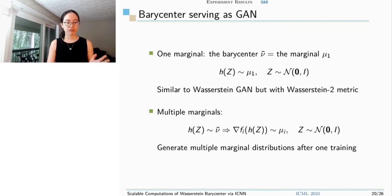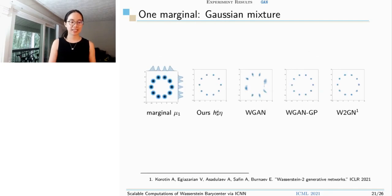That's because gradient of f_i is the map from barycenter to the i-th marginal. So we could input the samples z from standard Gaussian into h to get the barycenter samples, then input into gradient of f to get samples from marginal distributions. Let's look at some examples. We compare with Wasserstein GAN, Wasserstein GAN with gradient penalty, and the recent Wasserstein 2 generative networks.